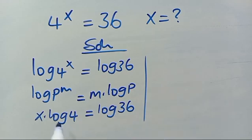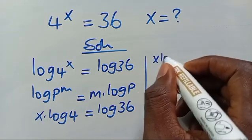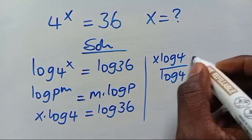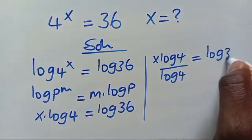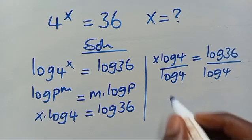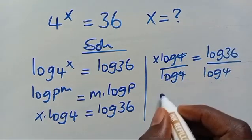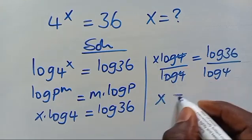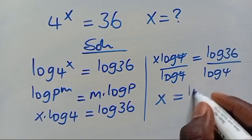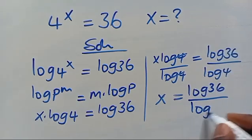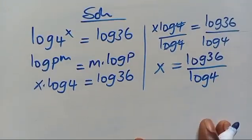So, meaning that we divide both sides by log 4 in order to get the value of x. Here we have x multiplied by log 4 divided by log 4, equals log 36 divided by log 4. So log 4 divided by log 4 gives us 1 times x, which gives us x equals log 36 divided by log 4.